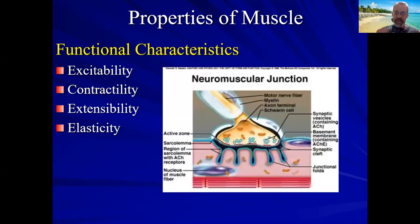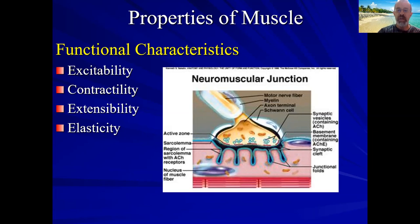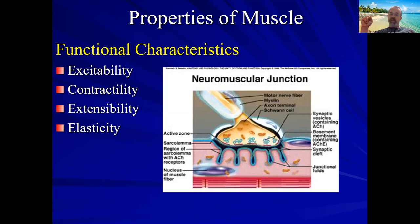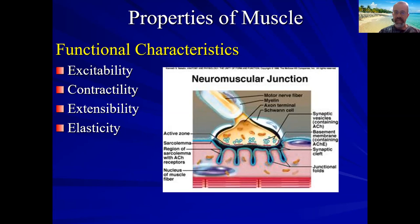Anytime you have a tissue with a particular function, there's got to be a reason it can do that. In the case of muscle, the reason it's involved in all those functions is first of all it's excitable — it responds to a stimulus. With nerves the response is generating an action potential and releasing neurotransmitter. In the case of muscle, the response is contraction or movement. Muscle can contract — the tissue shortens — allowing us to move our arms and legs or the heart to beat. Muscle can also stretch.